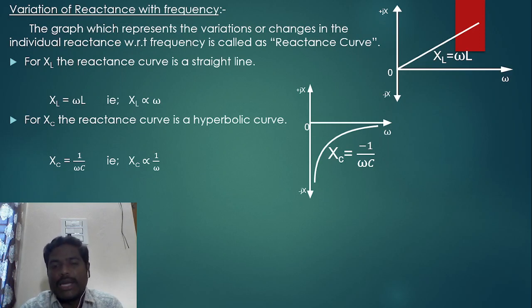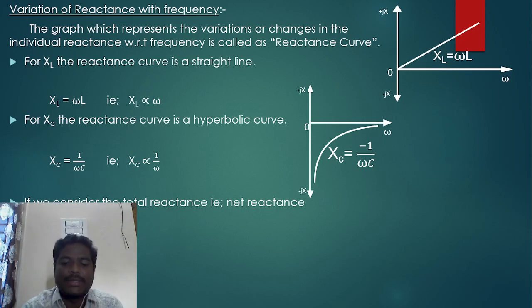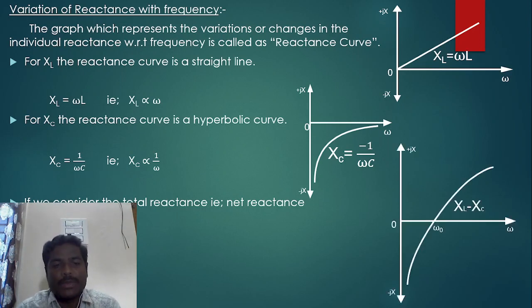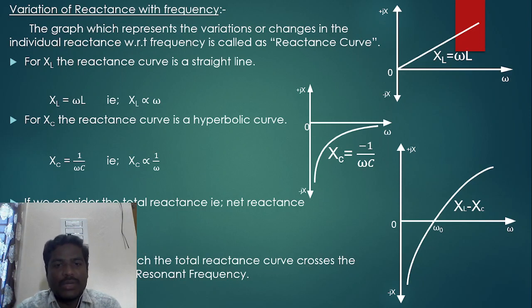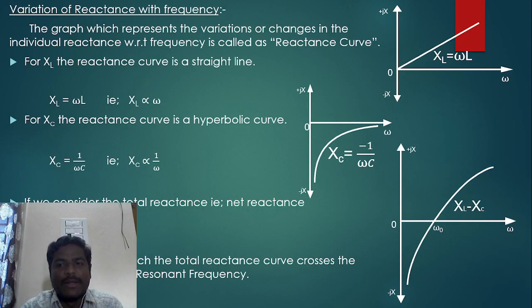The net reactance is Xnet = XL − XC. Subtracting these two curves gives the net reactance characteristic. The frequency at which the net reactance curve crosses the frequency axis is the resonant frequency ω₀ — this is where XL − XC = 0.